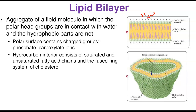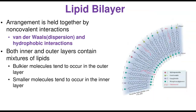The biological membrane, or plasma membrane, is built on the basic lipid bilayer, but also has proteins and other things like glycoproteins and glycolipids. The arrangement of this bilayer is held together by non-covalent interactions, including van der Waals forces — the dispersion or induced dipole forces — and hydrophobic interactions.